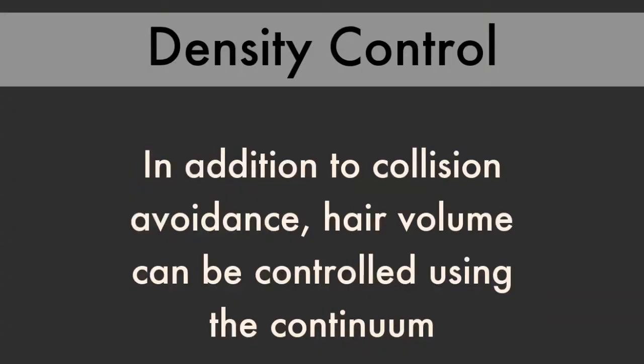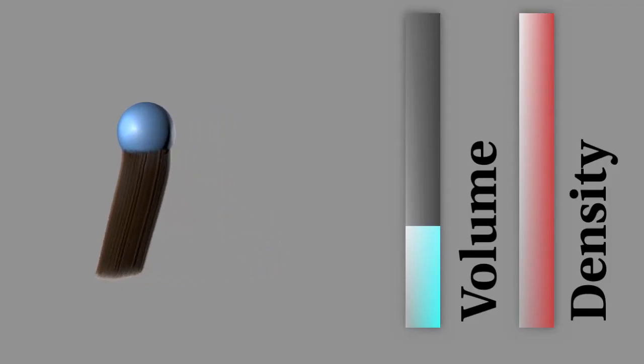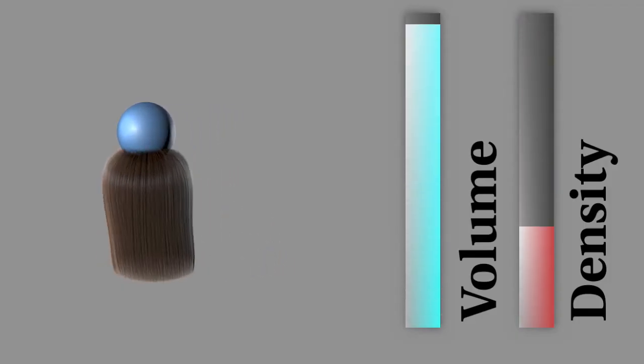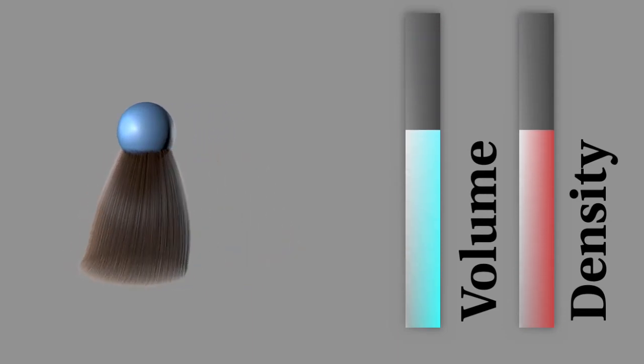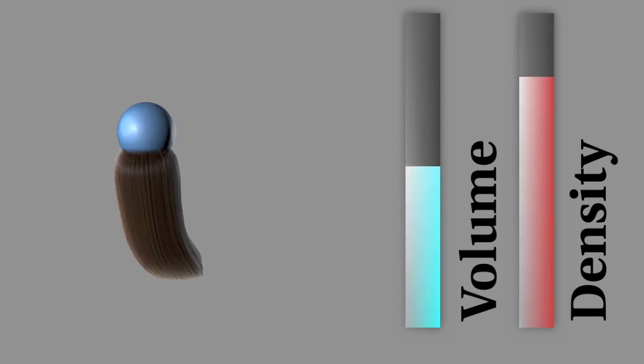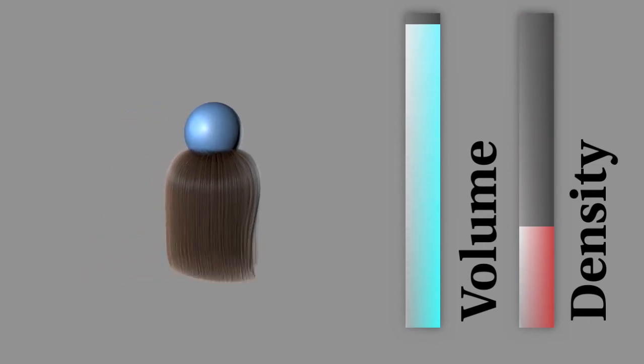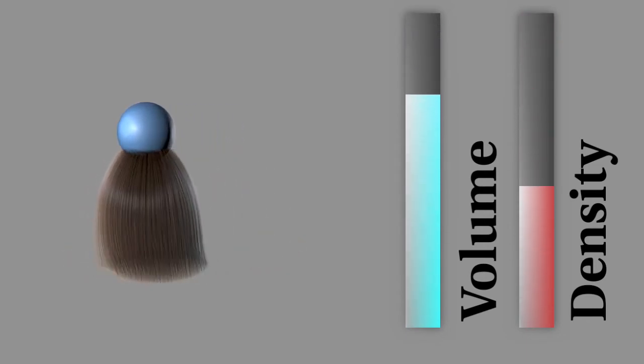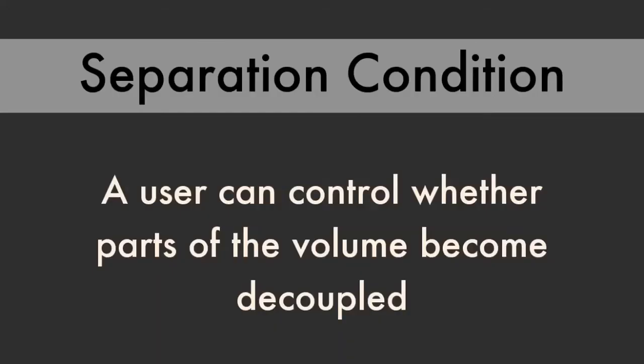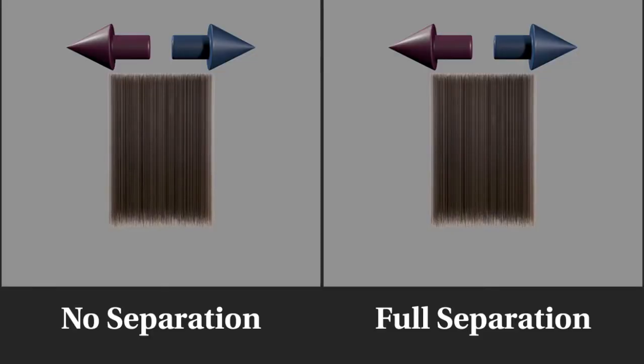In addition to collision avoidance, we can also control density and volume. The degree to which parts of the volume are coupled can be controlled with a separation condition.